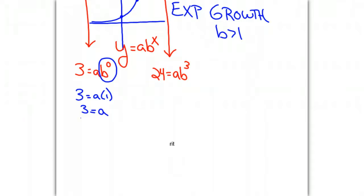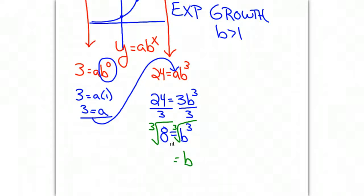What we're going to do now is take this a value and substitute it in for a in the second equation and solve for b. So 24 equals a, which is equal to 3, times b cubed. Divide both sides by 3. 24 divided by 3 is 8. 8 equals b cubed. We can now take the cube root of both sides and we get a b value of 2.